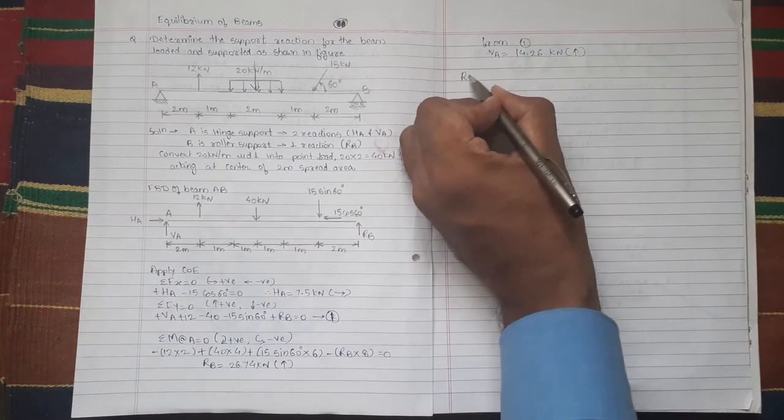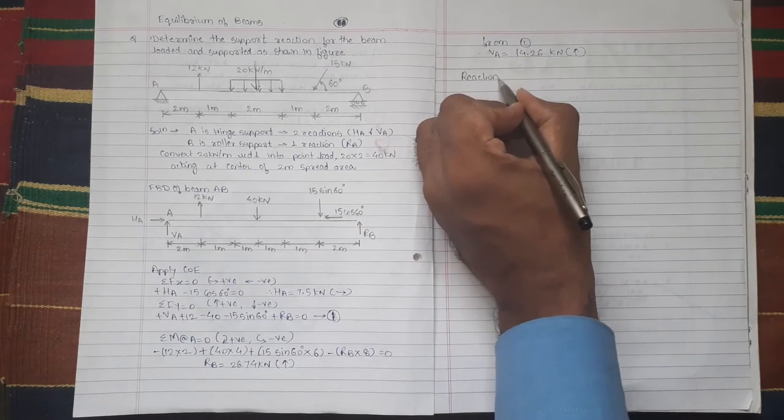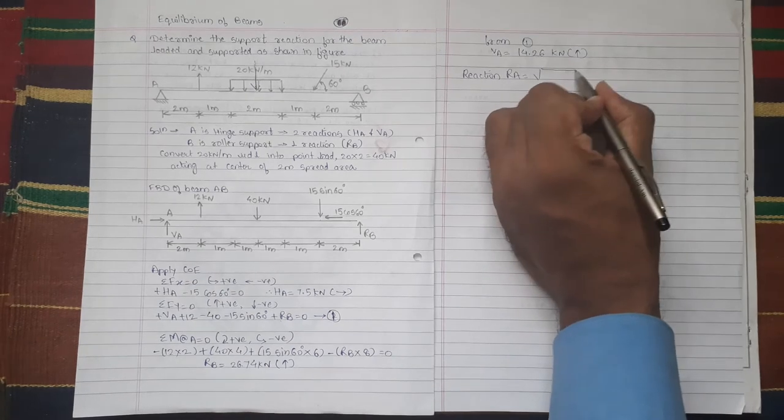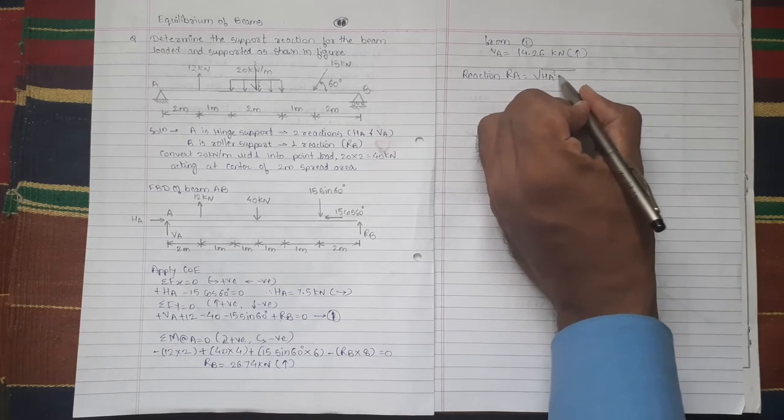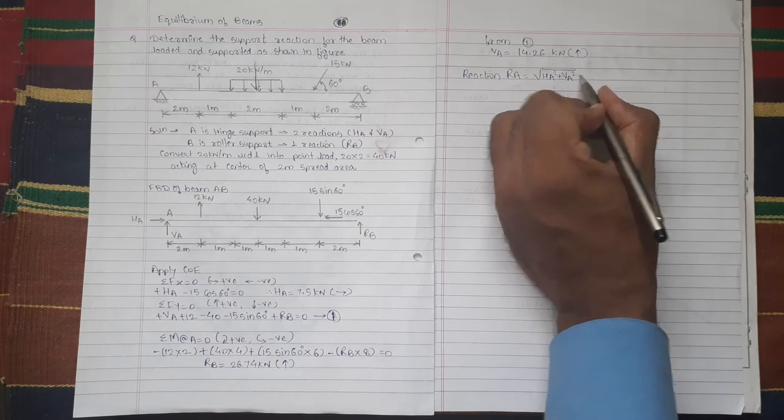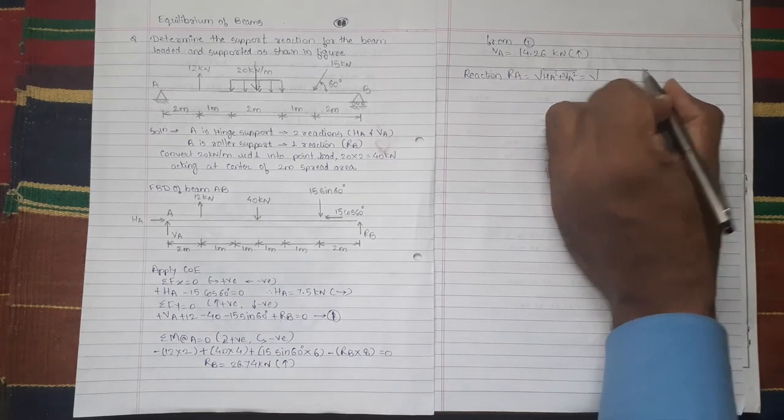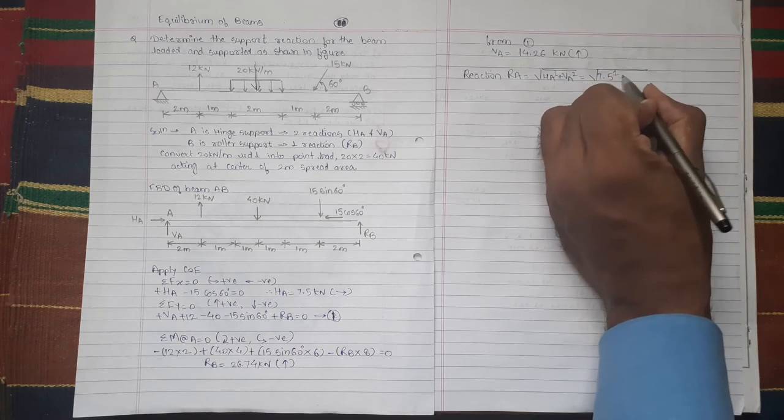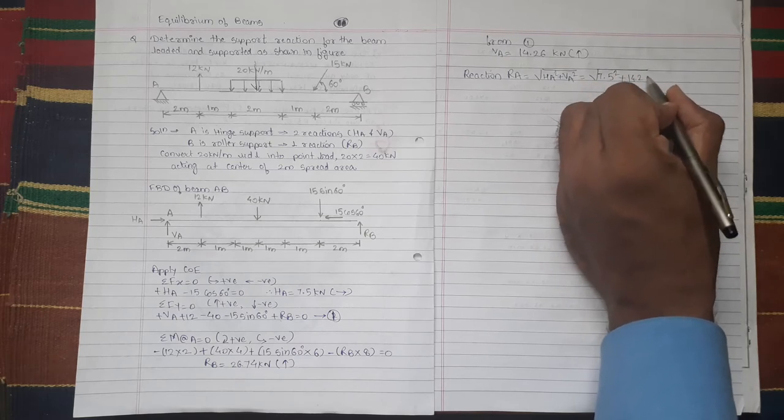Now we want reaction RA. So reaction RA is equal to square root of HA² + VA². We will put values: HA is 7.5² plus VA is 14.26².